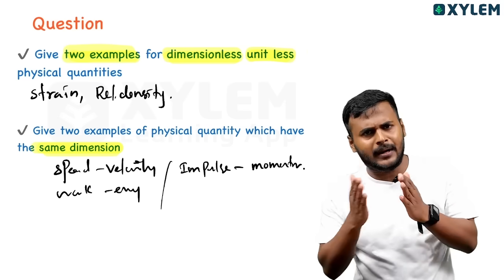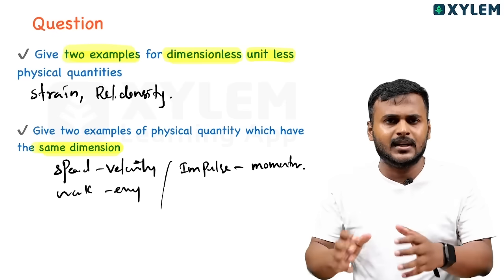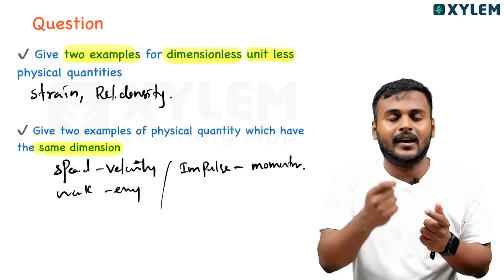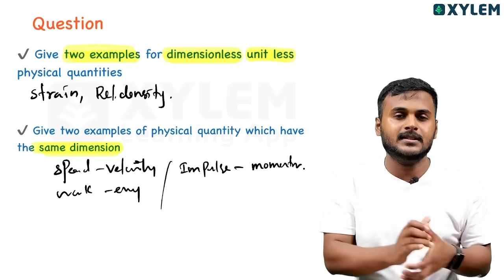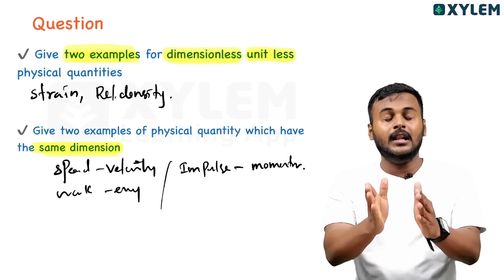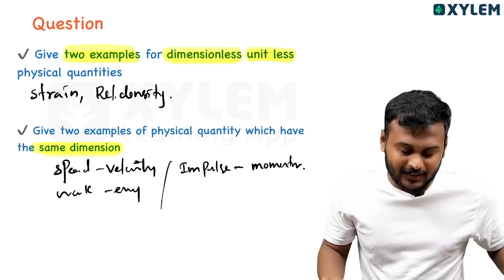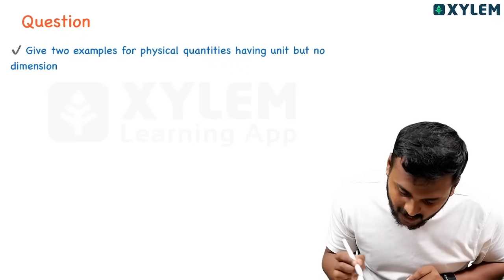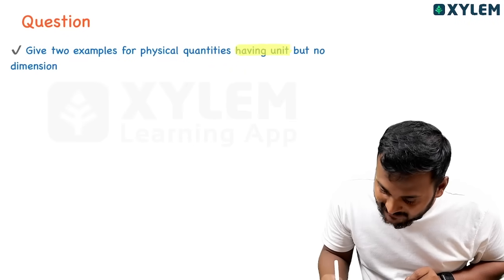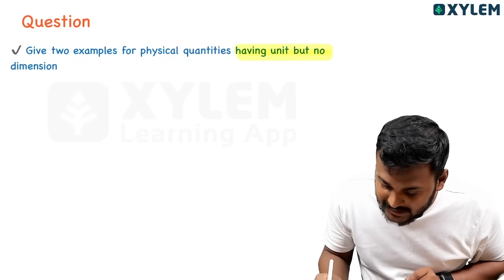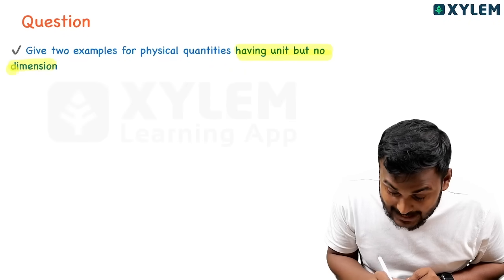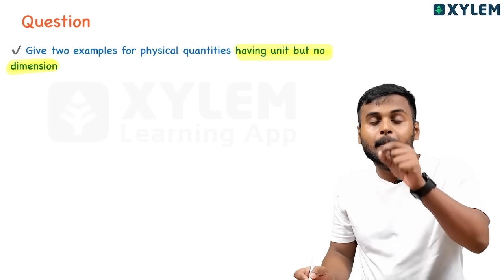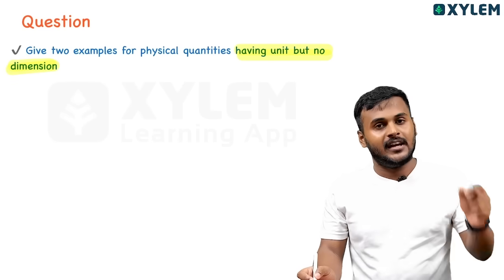So suggestions: speed and velocity, impulse and momentum are physical quantities with the same dimension. Next question: give two examples of physical quantities having a unit but no dimension.